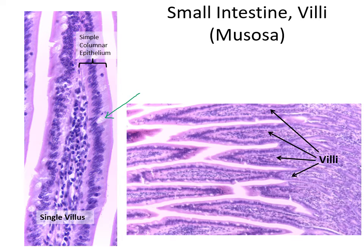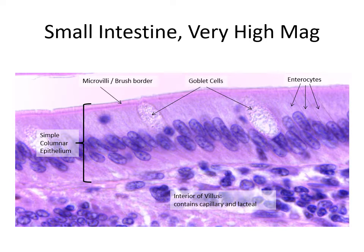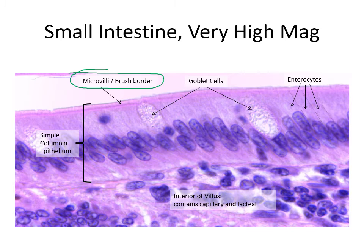This is our simple columnar epithelium lining each individual villus. And at very high magnification we can see the microvilli, also called the brush border. These are little extensions on the top of each of the simple columnar epithelial cells that serve to further increase surface area to facilitate absorption. Also the microvilli or brush border contain enzymes to help break nutrients down into their basic subunits — right down into amino acids and glucose or other monosaccharides.